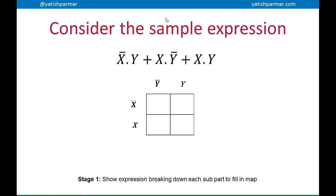So if we're going to look at the sample expression below, stage 1 is where we're going to show the expression by breaking down each sub-part, each sub-expression between the ORs to fill in the map. So if we look at the expression first of all, we can see that there is no not x and not y. Therefore, the output of not x and not y is going to be false. So we just stick a zero in it straight away.